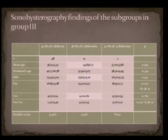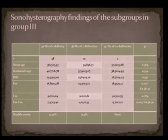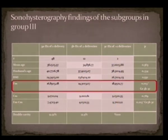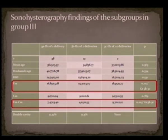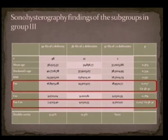These are the subgroups of group three: ladies with at least one healthy delivery, two healthy deliveries, and more than two healthy deliveries. We found that the thickness of the myometrium and the difference between the fundal thickness and the cornual thickness were statistically significantly higher. As the number of deliveries increases, the thickness also increases.